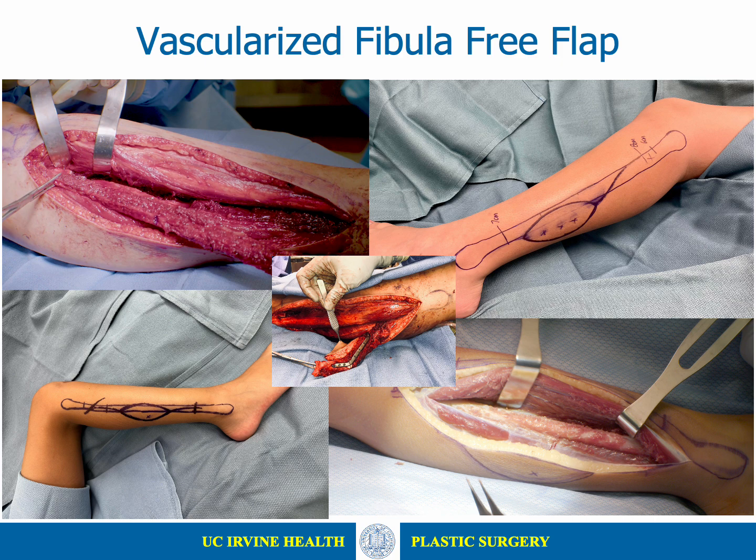The free fibula flap allows the transfer of a diaphyseal segment of the fibula, with or without skin or muscle, on a vascular pedicle consisting of the peroneal artery and its vena comitantes. This allows transfer to a distant site for segmental defect reconstruction. In addition to the inherent benefits of vascularized bone grafting, the free fibula flap has the advantage of providing immediate mechanical support when combined with internal fixation. If the recipient site has a soft tissue defect, vascularized muscle and skin can be harvested with the bone flap. The free fibula flap has been described for both upper and lower extremity, as well as head, neck, and spinal reconstructive procedures.